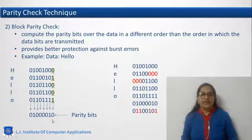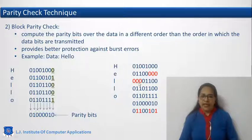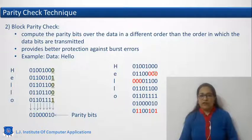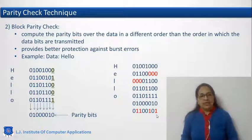So what happens if there is an error? Say a few bits are changed — the 6 bits shown in red are changed. For example, the sender sent 101 but the receiver received 000. Similarly, 3 bits in the character L are also changed. When the receiver calculates the parity, the number of 1s at certain positions does not match. So the parity bits are not matching, and the receiver is able to detect errors whether even or odd numbers of bits are changed.